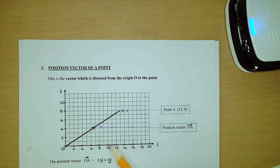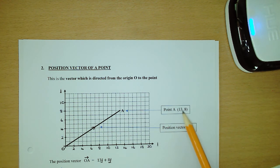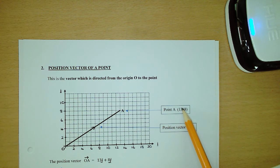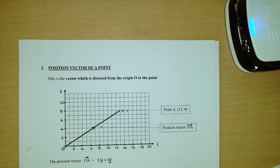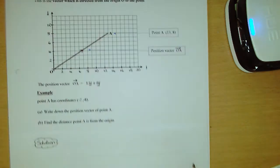If we wanted to get the position vector in component form, the easiest way to do it is just look at the coordinates of the other point — point A. The x coordinate tells you what the i component is, and the y coordinate of point A will tell you what the j component is. So the position vector OA is 13i plus 8j. Let's look at an example.